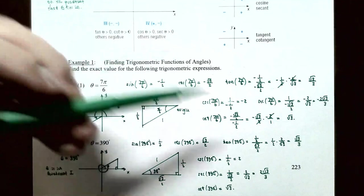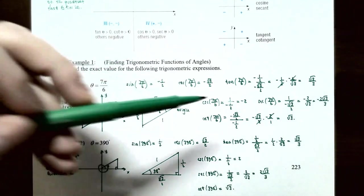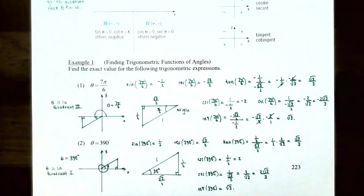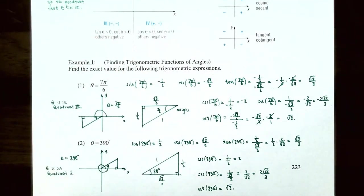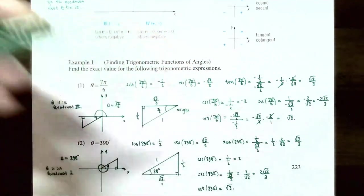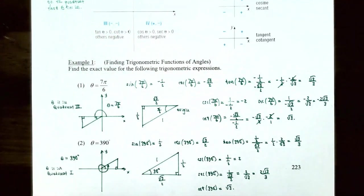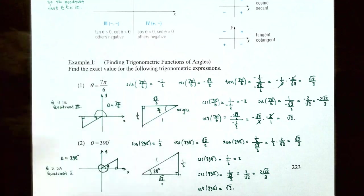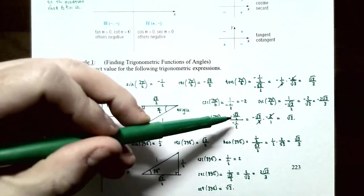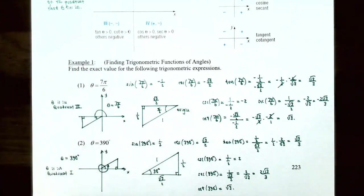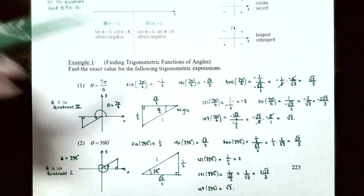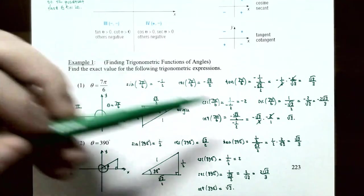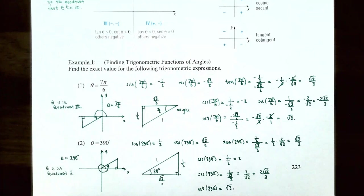Continuing with theta = 7π/6: secant(7π/6) = r/x = 1/(−√3/2) = −2/√3 = −2√3/3. Cotangent(7π/6) = x/y = (−√3/2)/(−1/2) = √3/2 × 2/1 = √3. So cotangent of 7π/6 is positive √3.